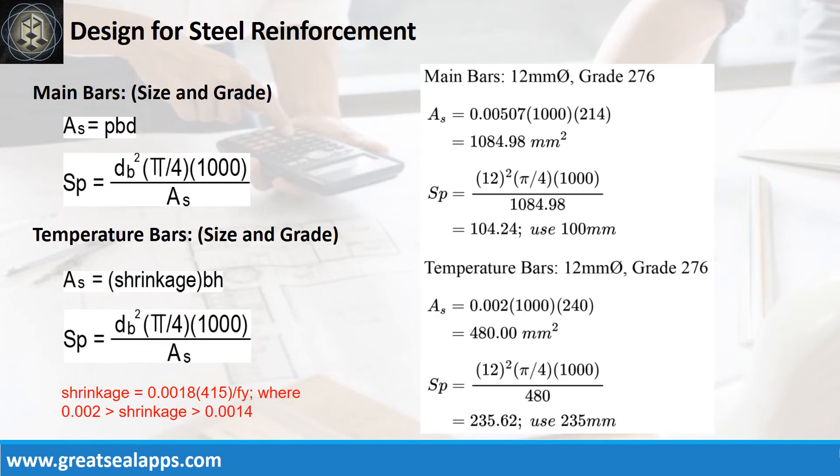Given ρ equals 0.00507, B equals 1000 millimeters and D equals 214 millimeters, the area of steel for main bars is 1084.98 square millimeters and the spacing for 12 millimeter bar is 100 millimeters.